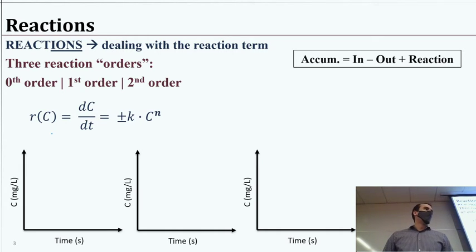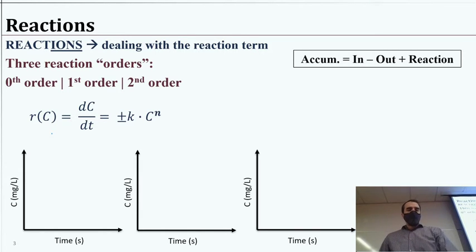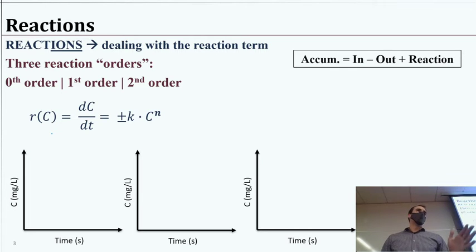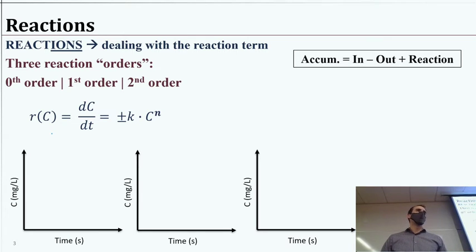We're going to consider essentially three reaction orders — this is likely review so I won't spend too much time on it. I want to be clear that the order of a reaction is completely independent of where it's occurring — it's independent of whether it's surface phase, interfacial, or bulk homogeneous. Reaction order describes how the concentration change depends on how much substance is present.